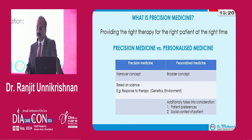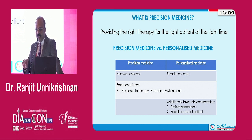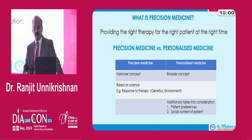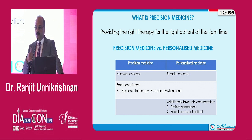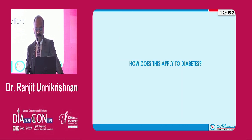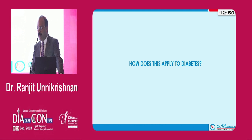If the patient is not able to take that drug, then you cannot use it — the best drug is of no use if it sits in the patient's cupboard, or worse still if it never enters the patient's home. Taking into consideration patient preferences and the social context of the patient while applying precision medicine is what is known as personalized medicine.